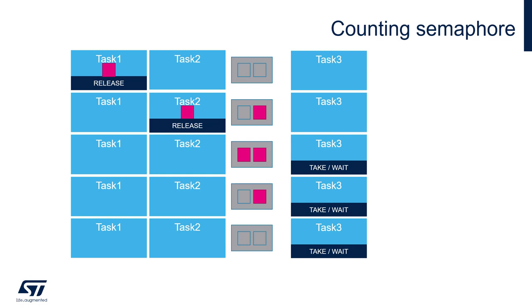Let's assume that we have three tasks at the same priority and a single counting semaphore with a maximum value of 2. At the beginning, task 1 is giving a semaphore, then just after, task 2 is giving the semaphore.